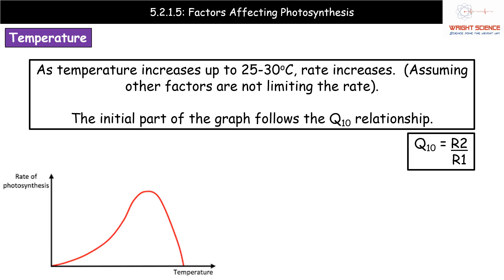First up is temperature. When we consider temperature, the first thing to remember is that photosynthesis is an enzyme-controlled reaction. Because it is an enzyme-controlled reaction, this graph should be highly familiar — it's the same shape as any enzyme-controlled reaction affected by temperature. When we increase the temperature, usually up to 25 to 30 degrees Celsius, the rate will increase, assuming no other factors are limiting the rate.